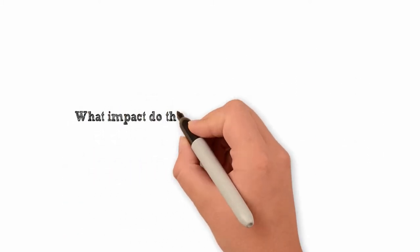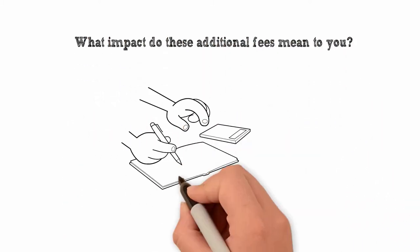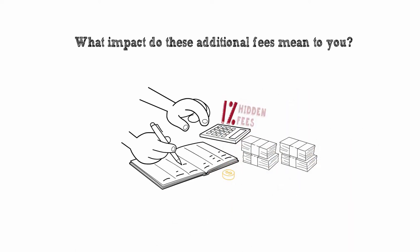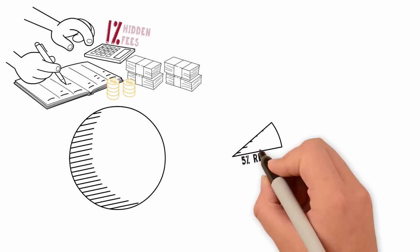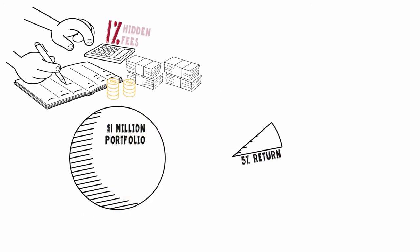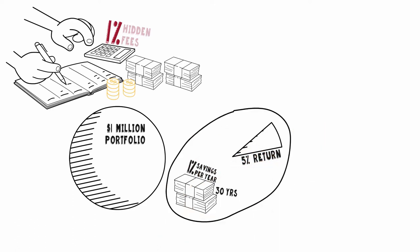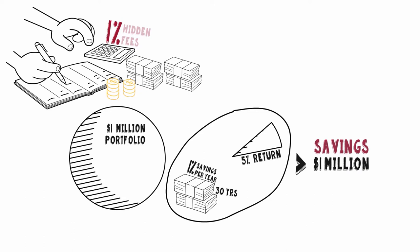What impact do these additional fees mean to you? An additional 1% of hidden fees over an investor's lifetime can be dramatic due to compounding effects. For example, assuming a 5% return, a $1 million portfolio that saves 1% per year for the next 30 years would equate to over $1 million in savings.